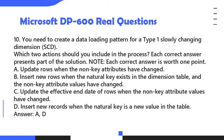Question 10. You need to create a data loading pattern for a Type 1 Slowly Changing Dimension (SCD). Which two actions should you include in the process? Each correct answer presents part of the solution. A. Update rows when the non-key attributes have changed. B. Insert new rows when the natural key exists in the dimension table and the non-key attribute values have changed. C. Update the effective end date of rows when the non-key attribute values have changed. D. Insert new records when the natural key is a new value in the table. Answer: A and D.